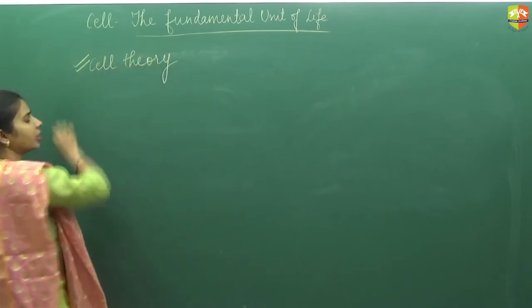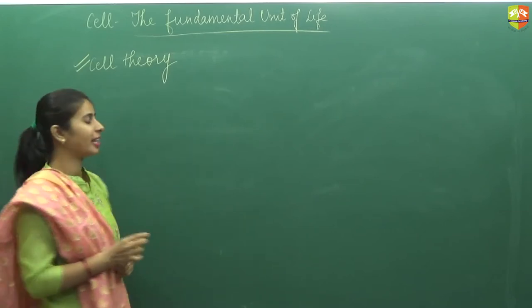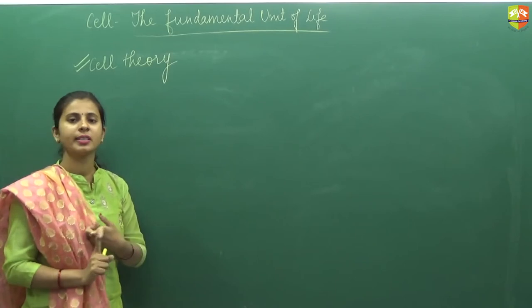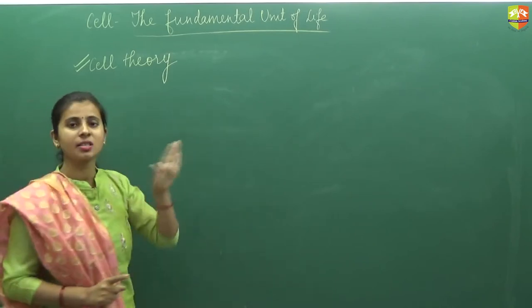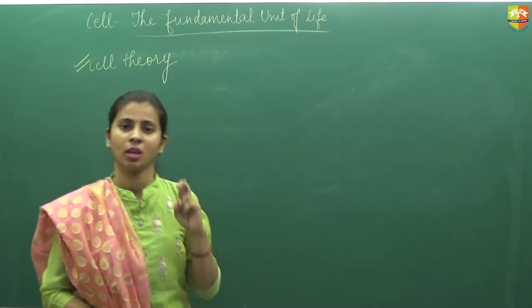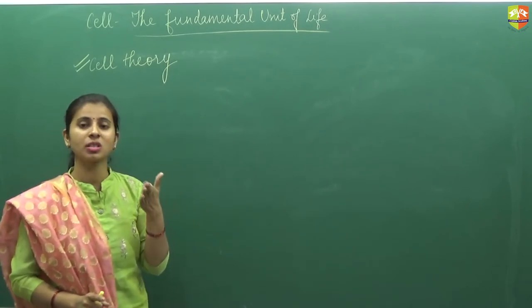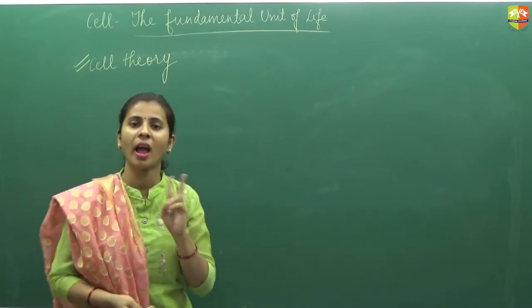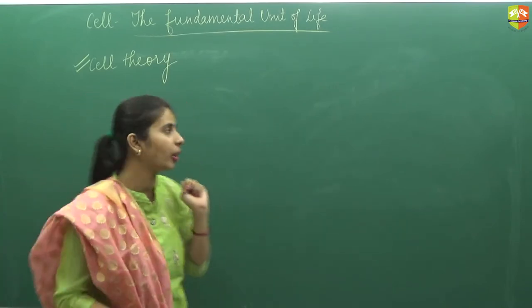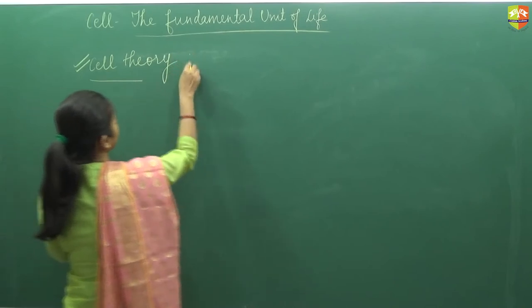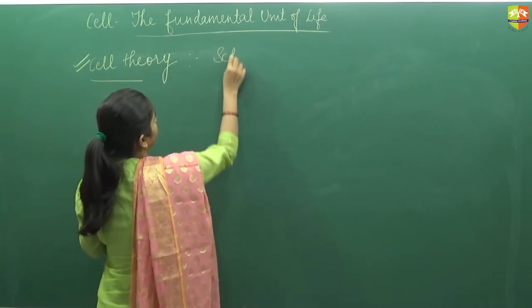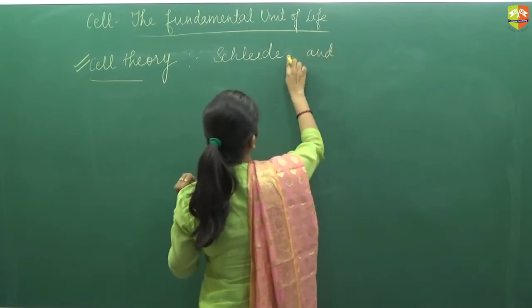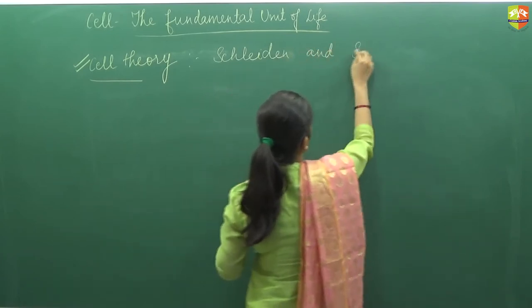So important is cell theory. As the cell was discovered, two more scientists whose name is Schleiden and Schwann - always remember, the two scientists for the cell theory is Schleiden and Schwann. They both worked together and then they proposed a theory in which there were some points. So mainly you have to learn about the two basic points that were in cell theory.